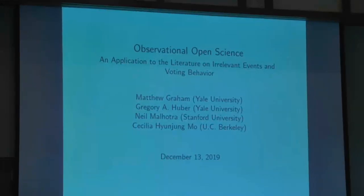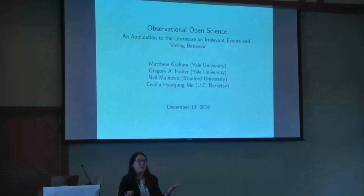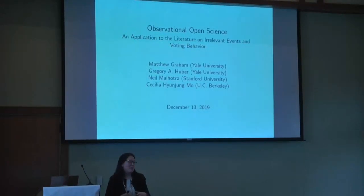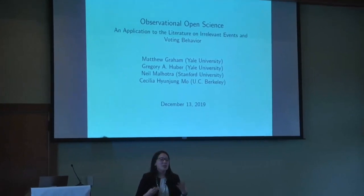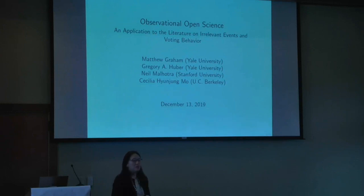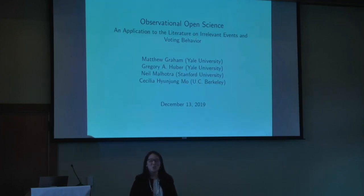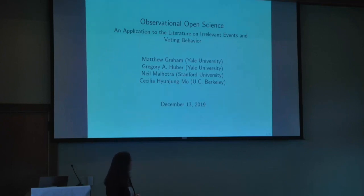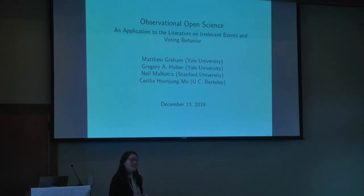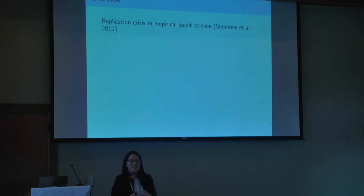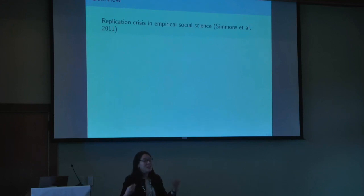The third presenter discusses transparent research in the context of observational data, joint work with Matthew Graham, Greg Huber, and Neil Malhotra. The replication crisis has prompted social and natural scientists to think about how to enhance the credibility of research. Proposed solutions have really focused on experimental work — social psychology, development economics — with the main mode of data generation being randomized experiments. In that paradigm, the proposed approaches include replicating experiments and pre-registration of pre-analysis plans that tie researchers' hands before analyzing data.